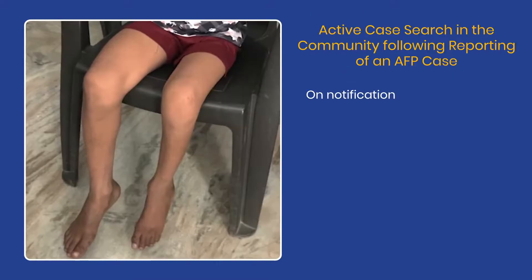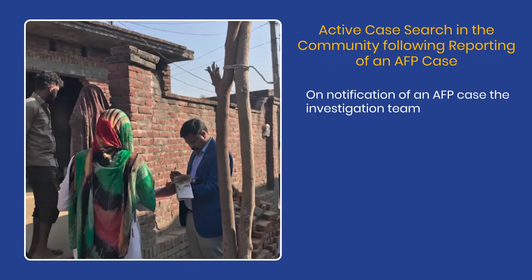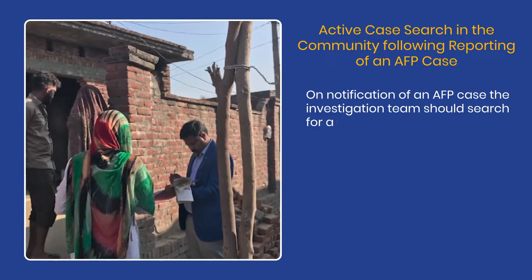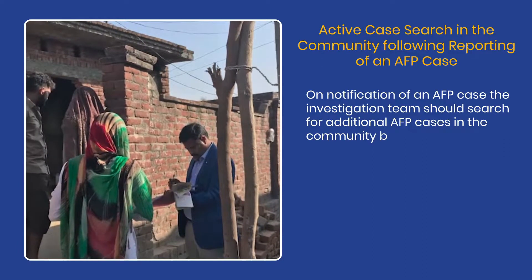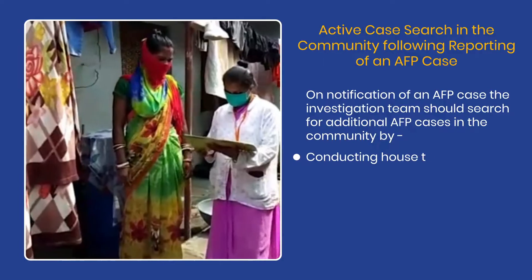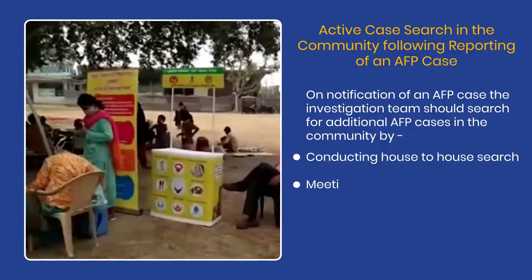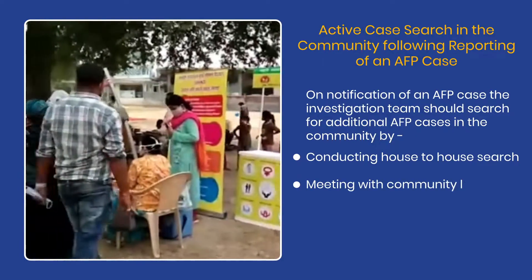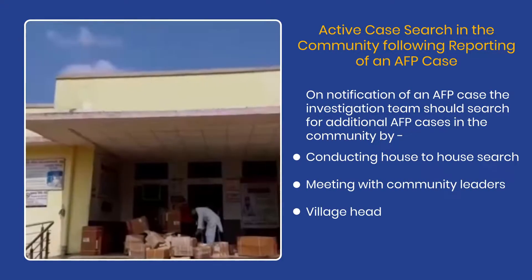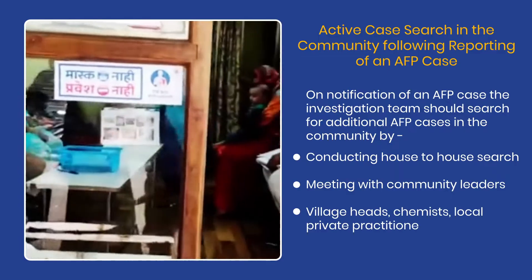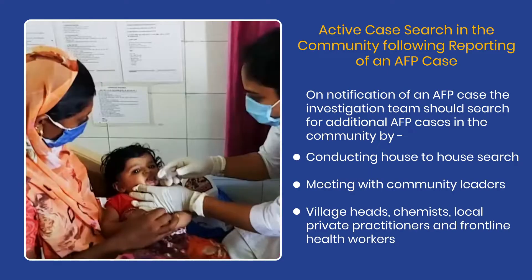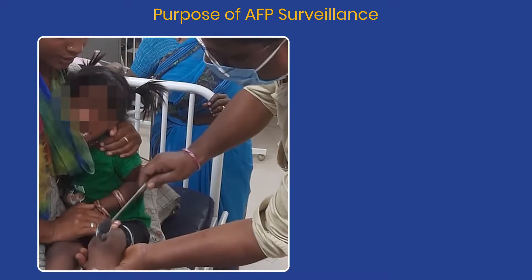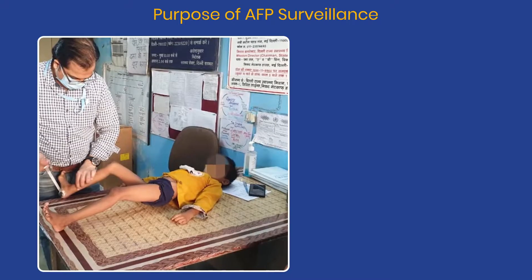On notification of an AFP case, the investigation team should search for additional AFP cases in the community by conducting house-to-house search, meeting with community leaders, village heads, chemists, local private practitioners, and frontline health workers.